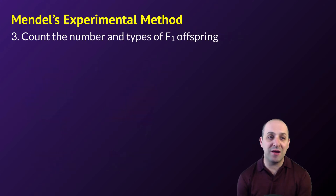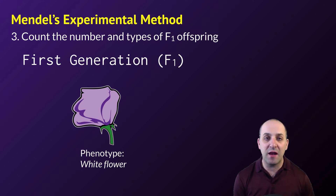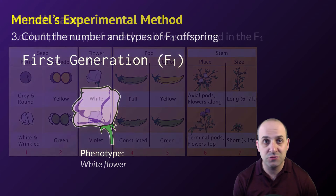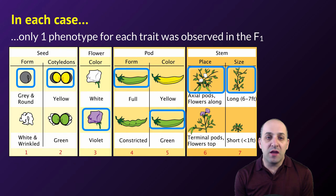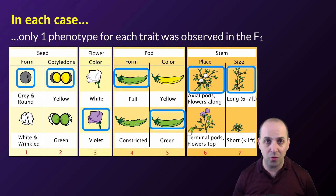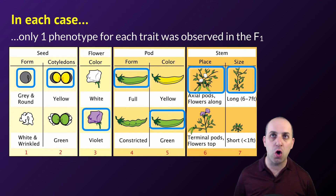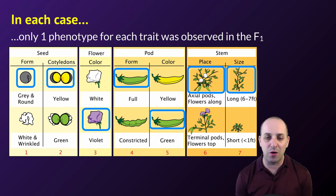Then Mendel counted the number and types of F1 offspring — the first filial generation. We can see that everybody's purple now, which is interesting. Mendel did this for every trait he looked at, and he noticed that the F1 always showed only one of the two traits. The other trait seemed to have disappeared — which was interesting, because notions of inheritance in the late 1800s really dealt with this blending model, where tall and short come together and you get middle size, or purple and white flowers put together give you some intermediate color. But he didn't see that.